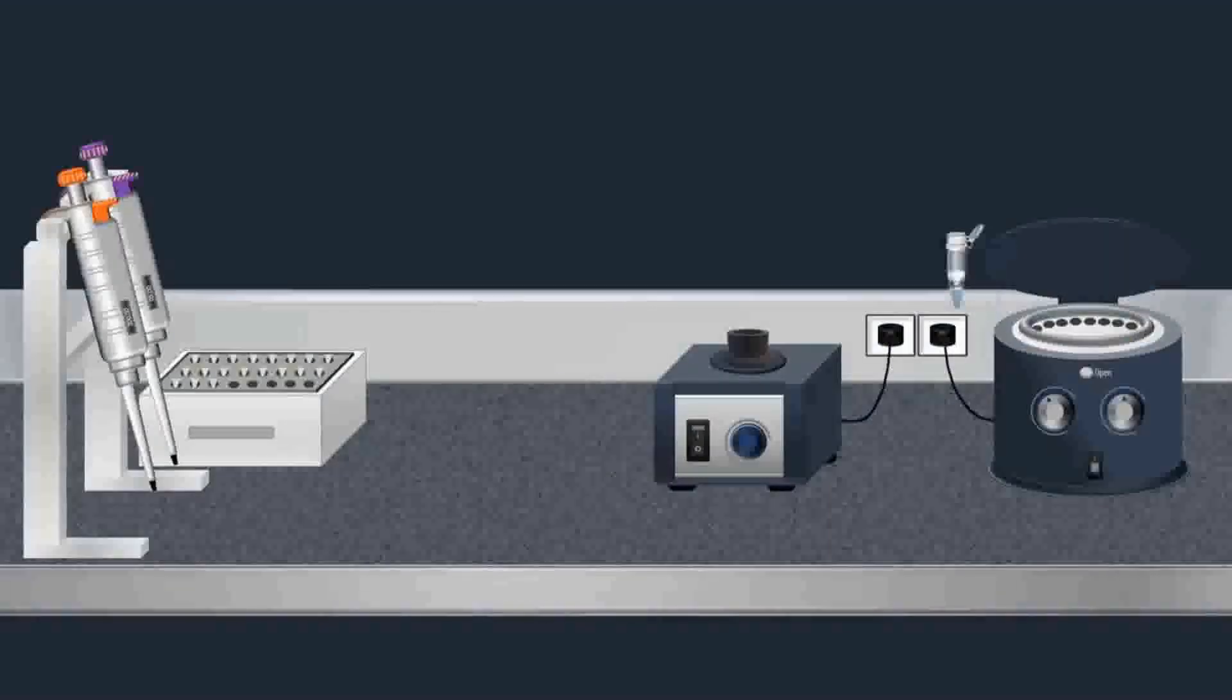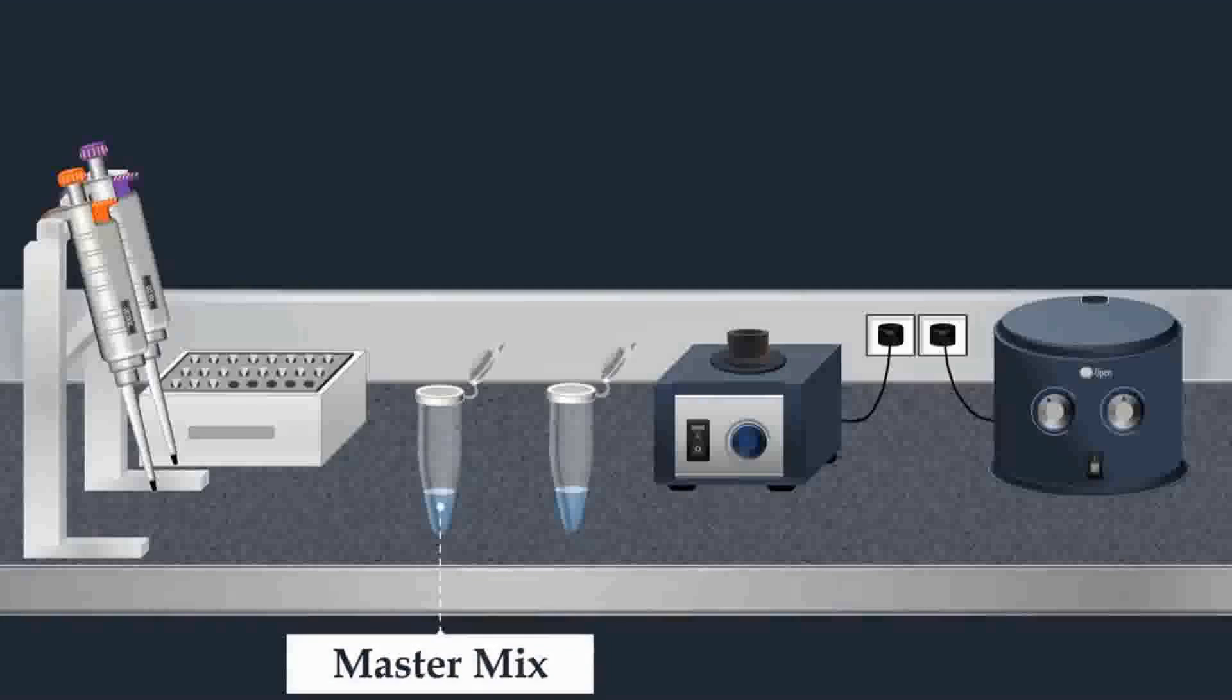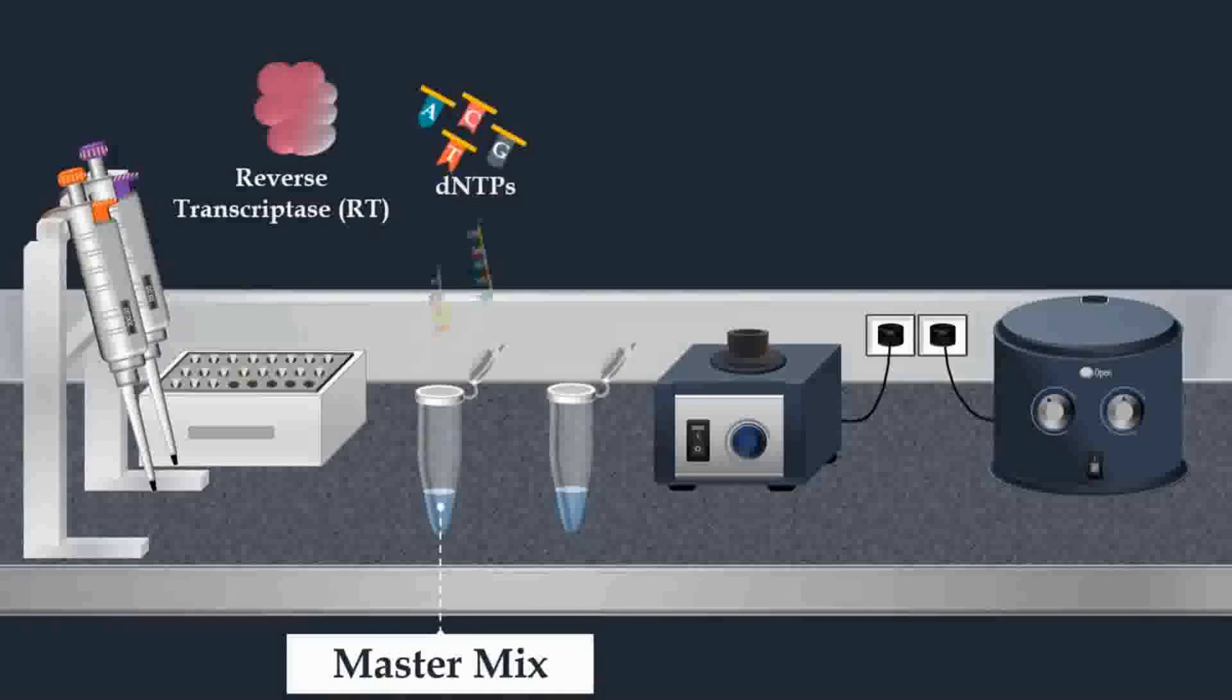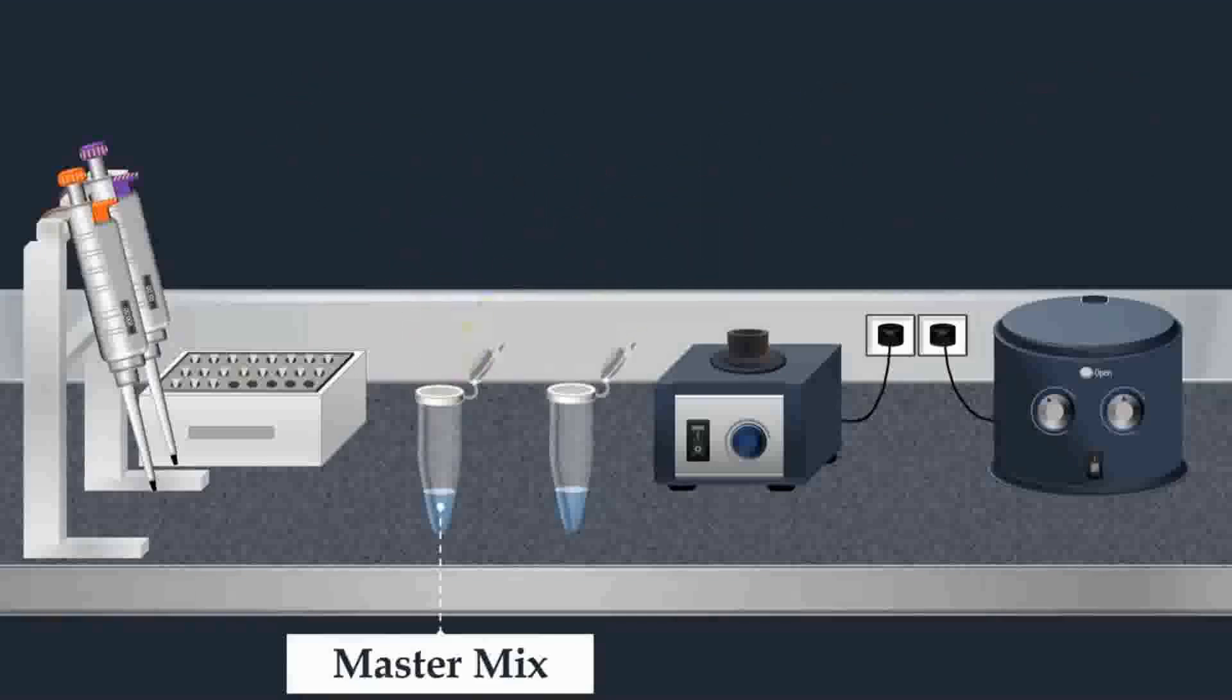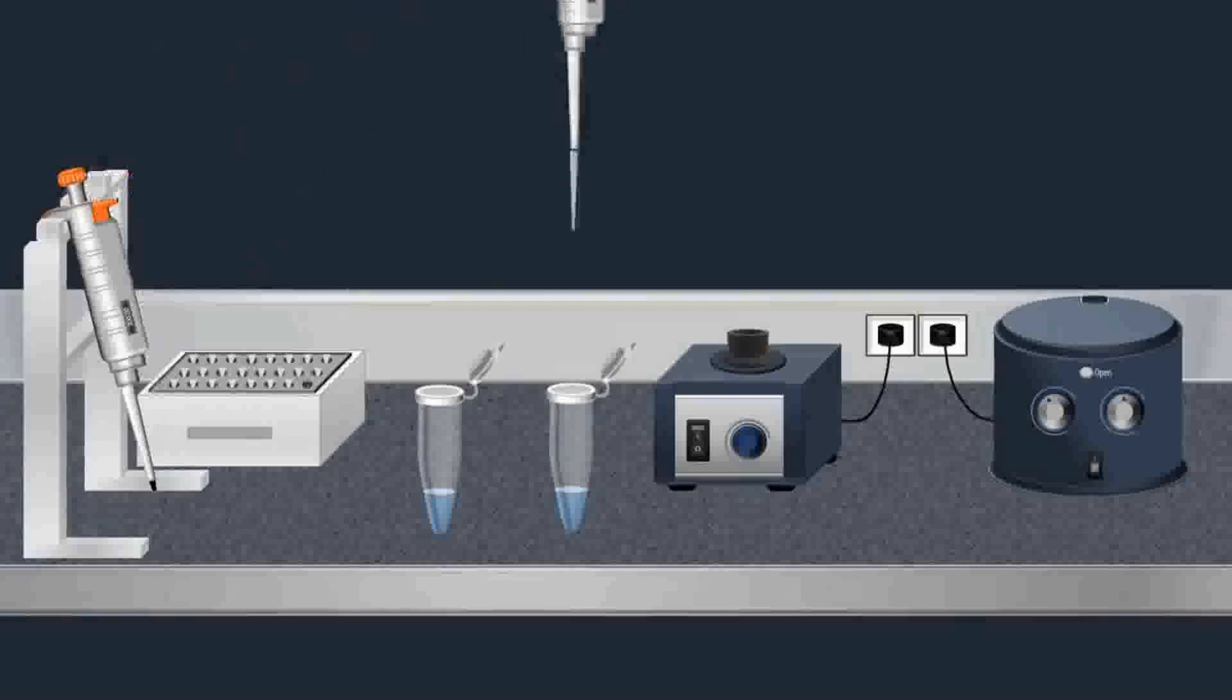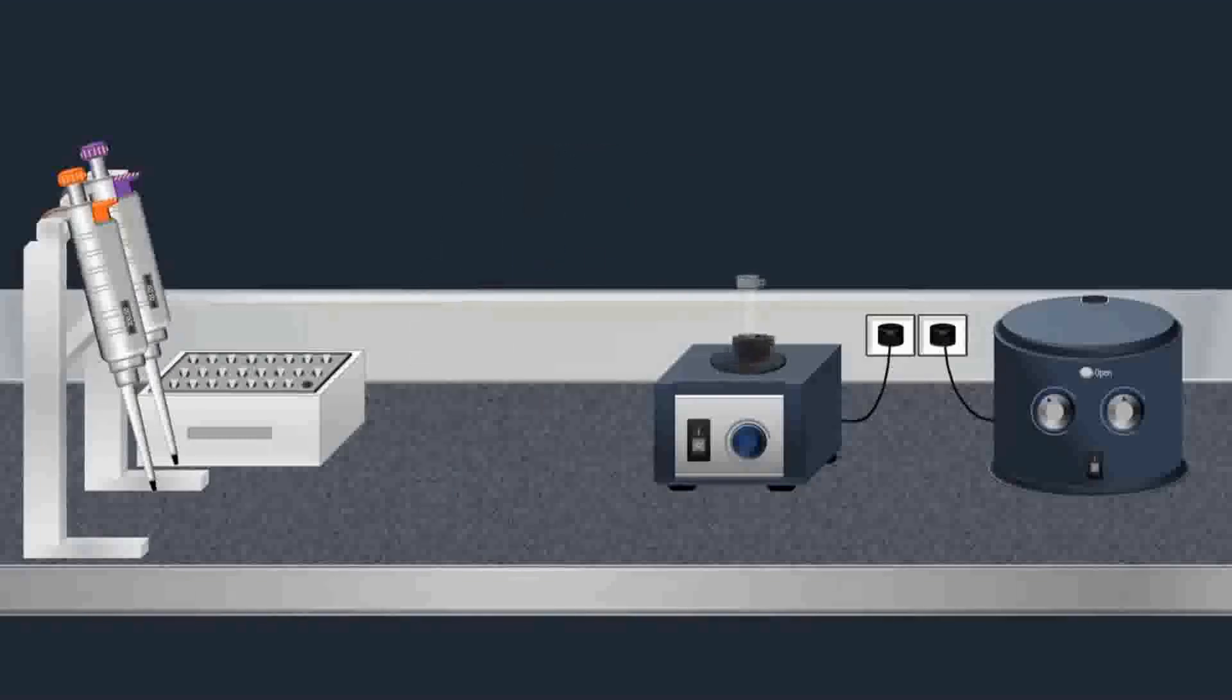After the extraction of the viral RNA, the next step is the preparation of the reaction mixture for PCR amplification. In this step, master mix is used which is a pre-mixed concentrated solution that consists of buffer, reverse transcriptase enzyme, nucleotides, forward primer, reverse primer, TaqMan probe, and DNA polymerase. Finally, to complete this reaction mixture, the RNA template is added. The tube is mixed by pulse vortexing. Then the reaction mixture is loaded into a PCR plate which generally contains 96 wells, allowing the analysis of several samples at the same time.